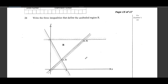Welcome friends, this is Riki Chisambo. In today's video we want to revise this question under linear programming: write the three inequalities that define the unshaded region R. So we have region R which is unshaded. It is very important that we understand what we mean when we say inequalities — we are comparing two values or expressions.